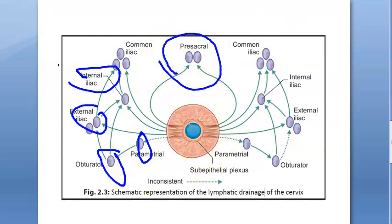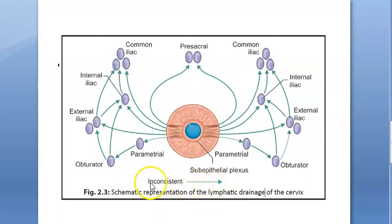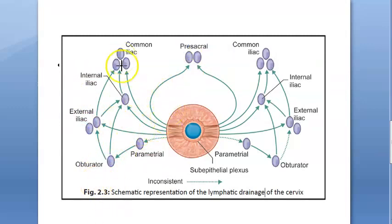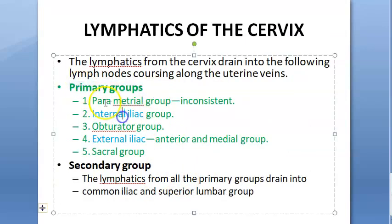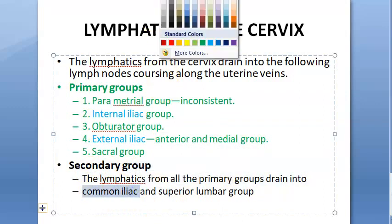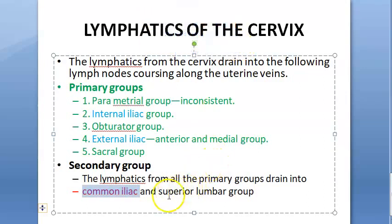Then there is the sacral - they have written pre-sacral, marked in dotted lines as inconsistent. So the five primary groups are: parametrial, external iliac, internal iliac, obturator, and sacral. The secondary group is the common iliac and the superior lumbar. Always use the word 'group' for all of these - parametrial group, internal iliac group, obturator group, external iliac group, sacral group, common iliac group, and superior lumbar group.